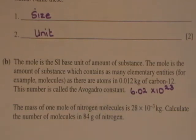So the mass of one mole of nitrogen molecules is 28 by 10 to the minus 3 kilograms, which is 28 grams. Calculate the number of molecules in 84 grams of nitrogen. So if we...